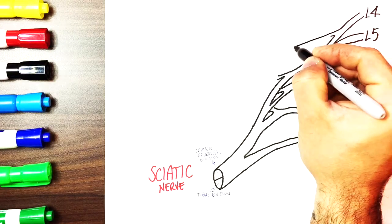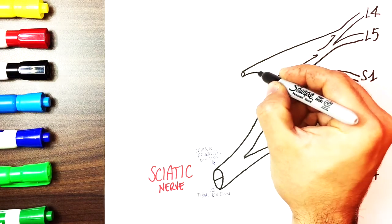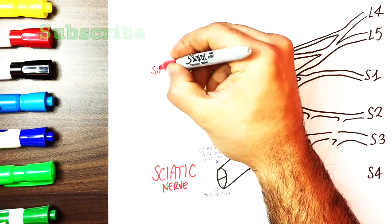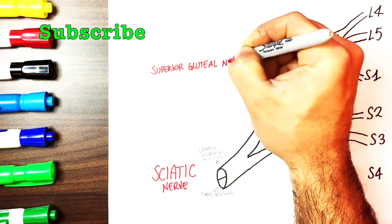Now let's look at the smaller branches. From L4, L5 and S1 arises the superior gluteal nerve which innervates the gluteus medius, gluteus minimus and tensor fasciae latae muscles.